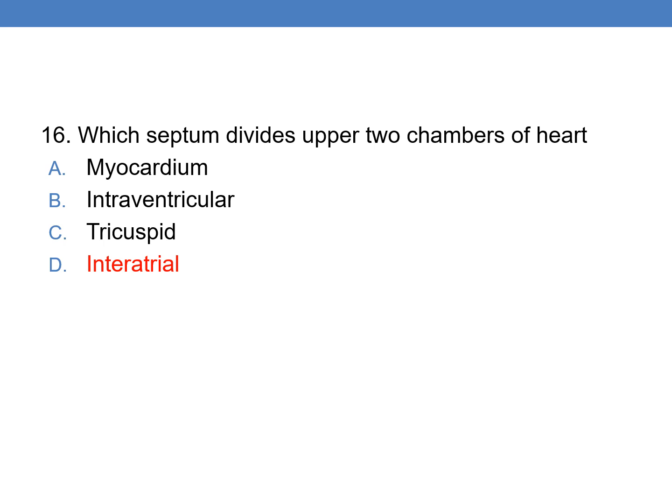Which septum divides the upper two chambers of the heart? The interatrial septum divides the upper two chambers of the heart, because the atria are the upper two chambers. The interatrial septum divides the upper two chambers of the heart.